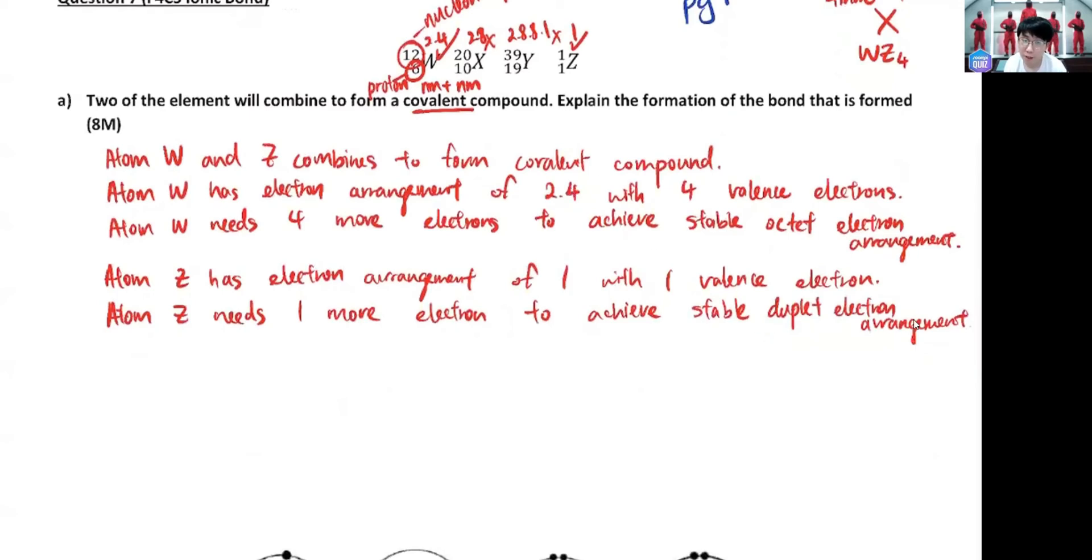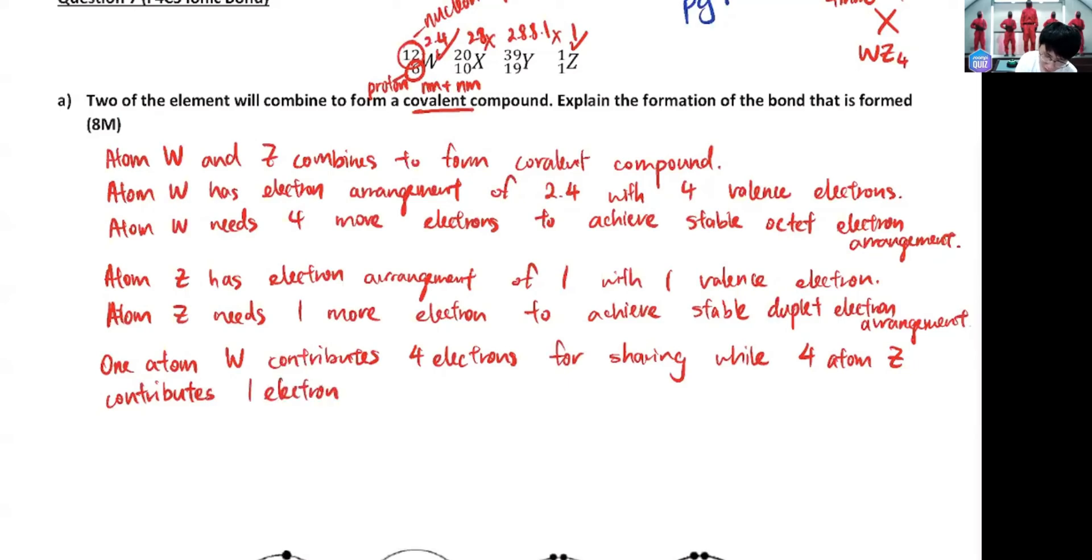Okay, so once you actually try to talk about this already, how many W and how many Z do we need? By our analysis, one W, four Z. Okay, so what do we talk about? One atom W contributes - how many do you need to contribute? Since he need four, he has to contribute four. Contributes four electrons for sharing, while four atom Z contribute - each Z only contributes one electron each for sharing to form covalent compound WZ4. There you go, eight marks.